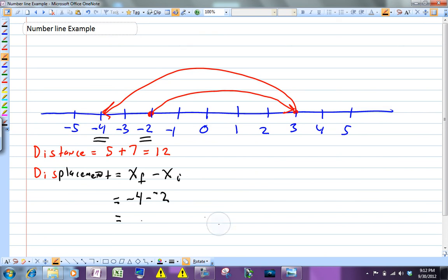You're going to get a displacement that is minus 2. All that means is that you end up at a place 2 to the left of where you started. That is your displacement.